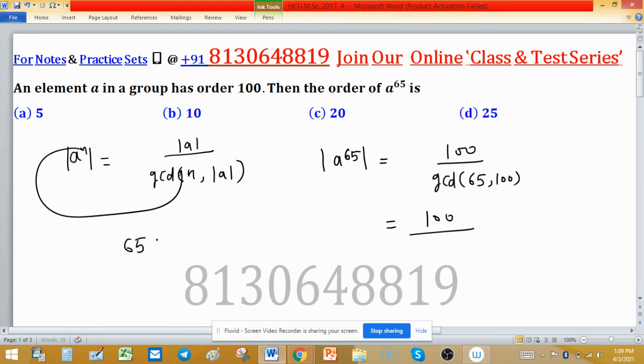We will find the greatest common divisor of 65 and 100, so 5 into 2, the GCD is 5. So 100 divided by 5, this is equal to 20. So option C is correct.